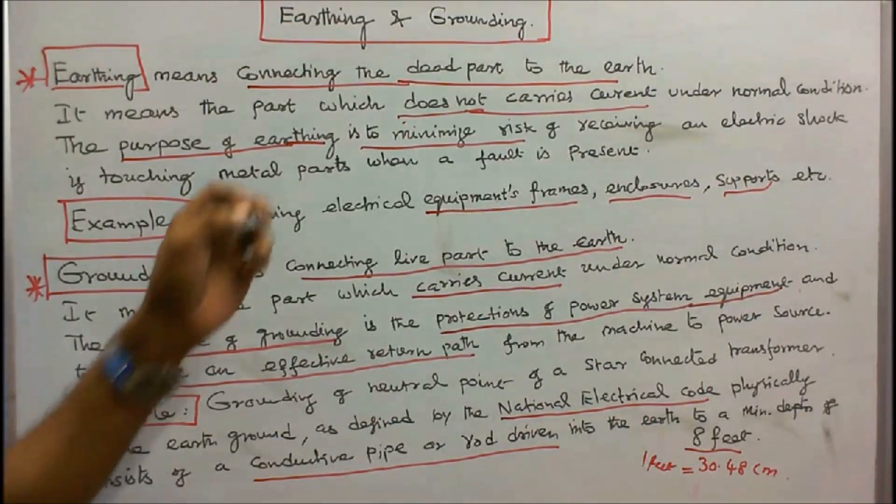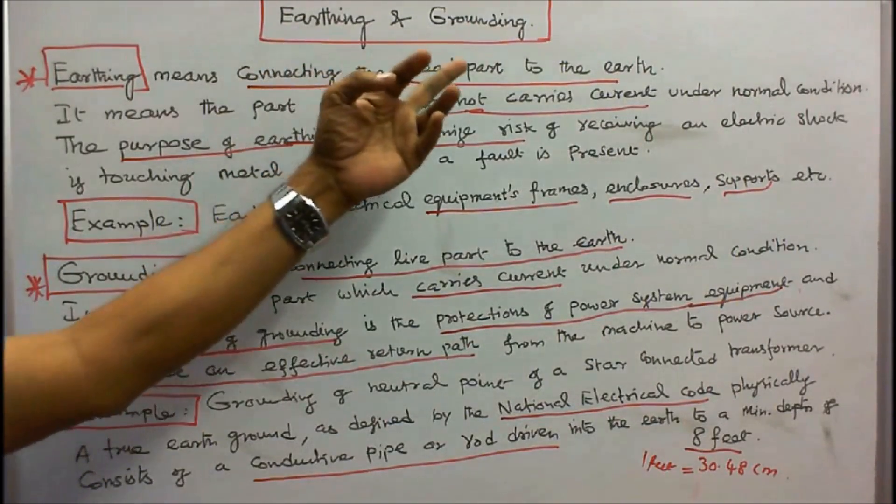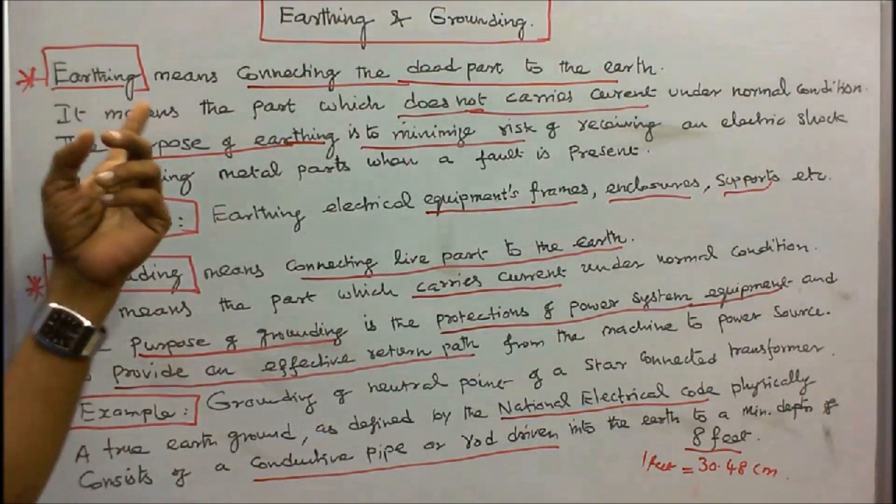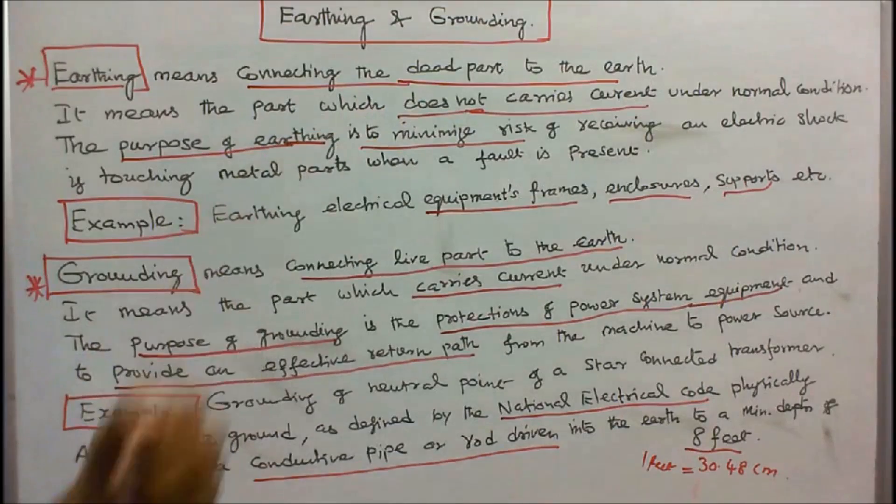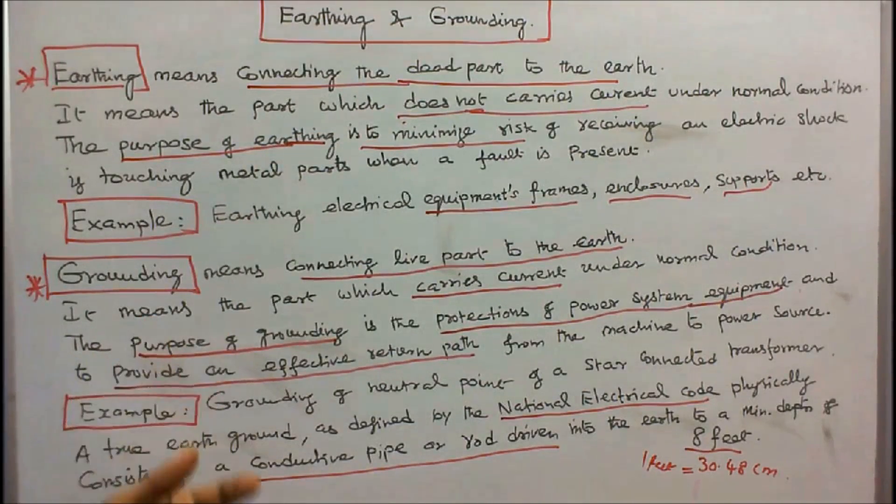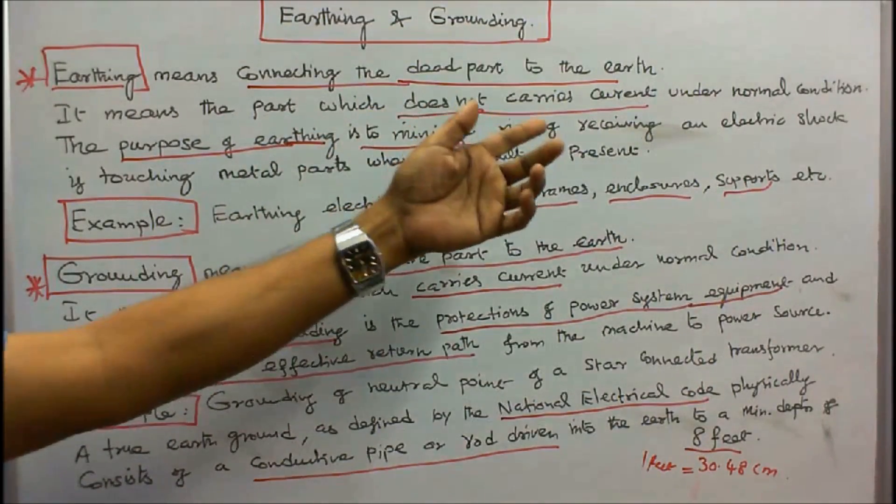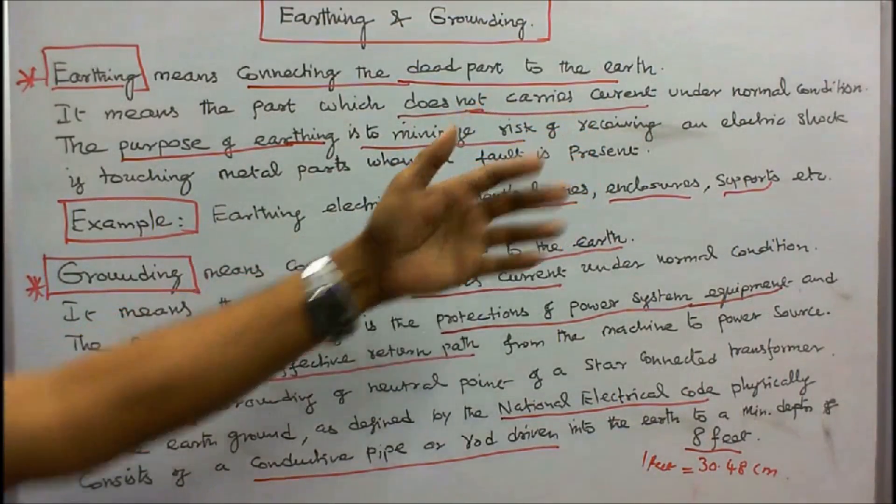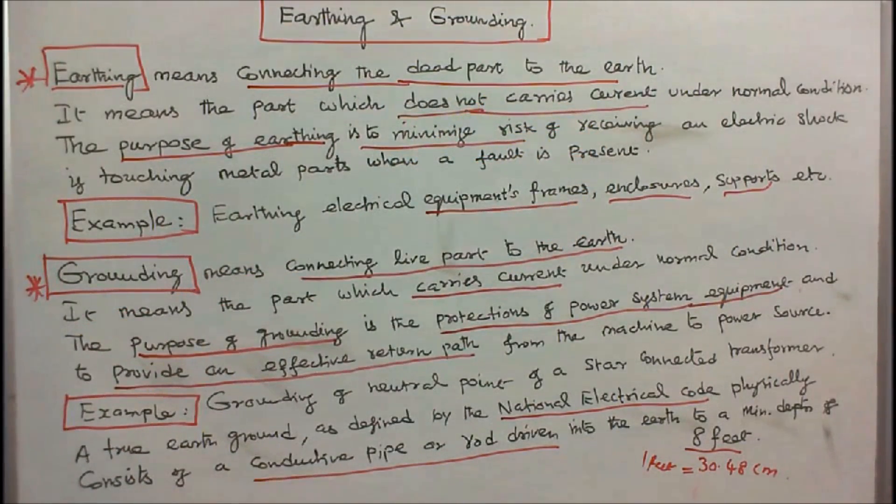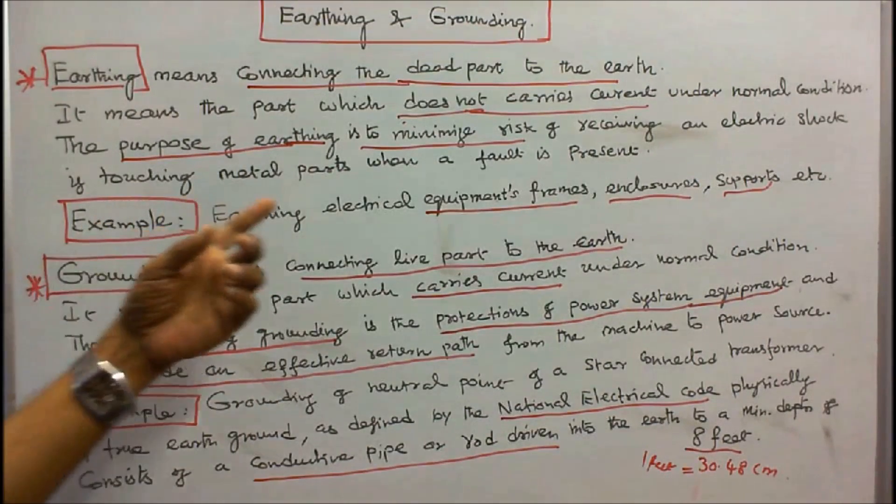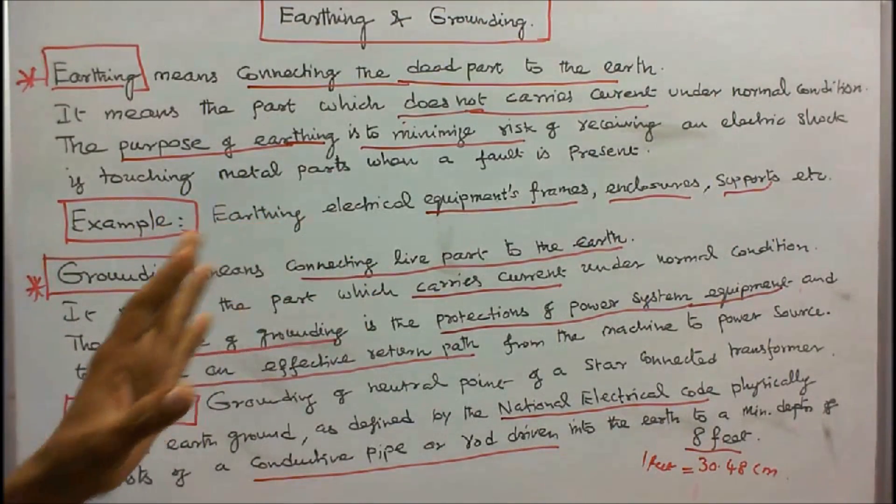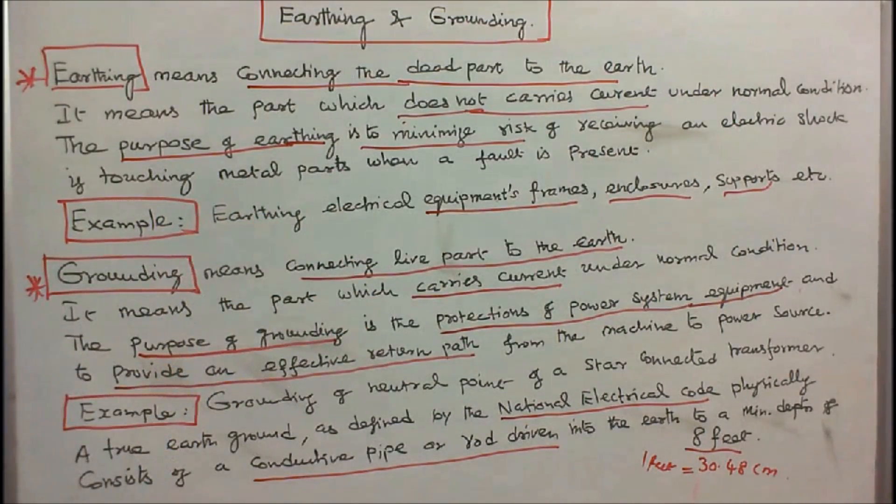This class we discuss about earthing and grounding. Earthing means connecting the dead part to the earth. It means the part which does not carry current under normal condition. The purpose of earthing is to minimize risk of receiving an electric shock if touching metal parts when a fault is present.